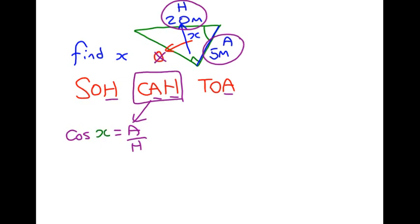We're going to use X to represent the unknown, like in the question. A is 5 and H is 20.